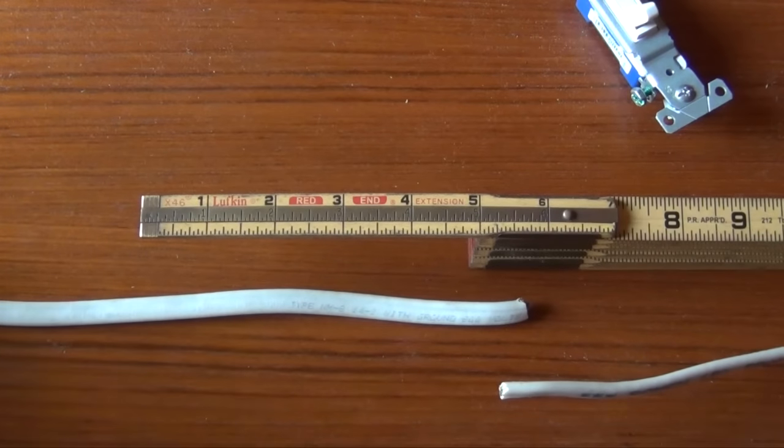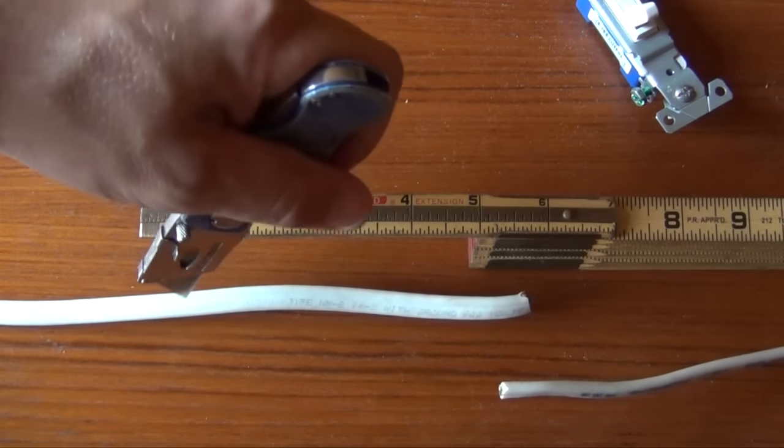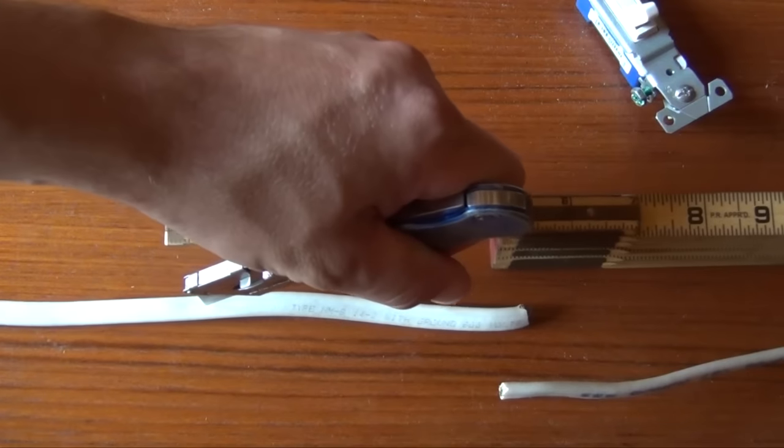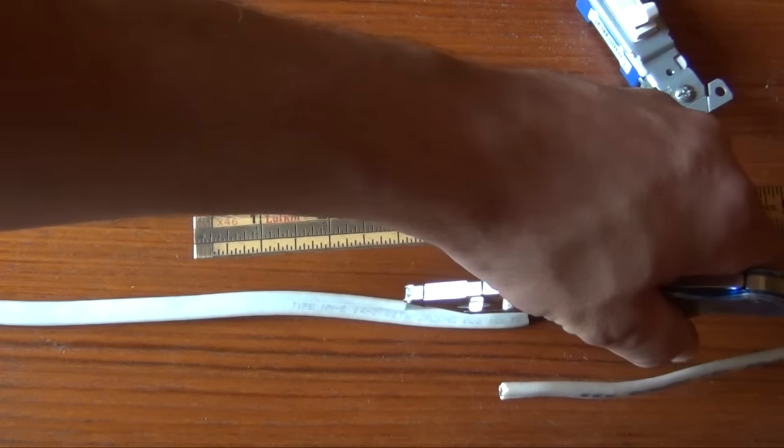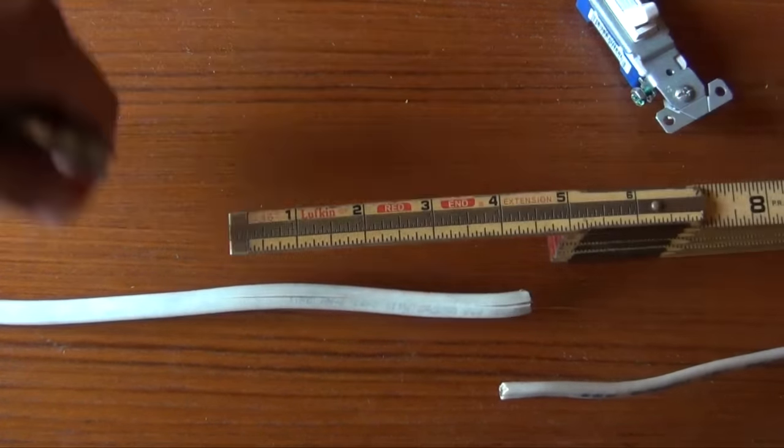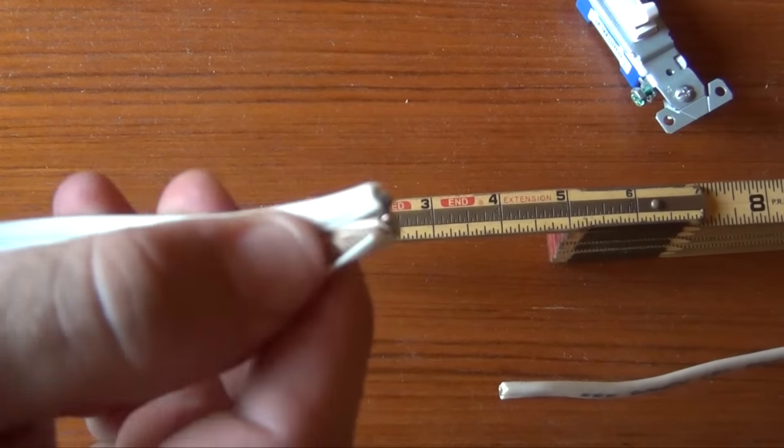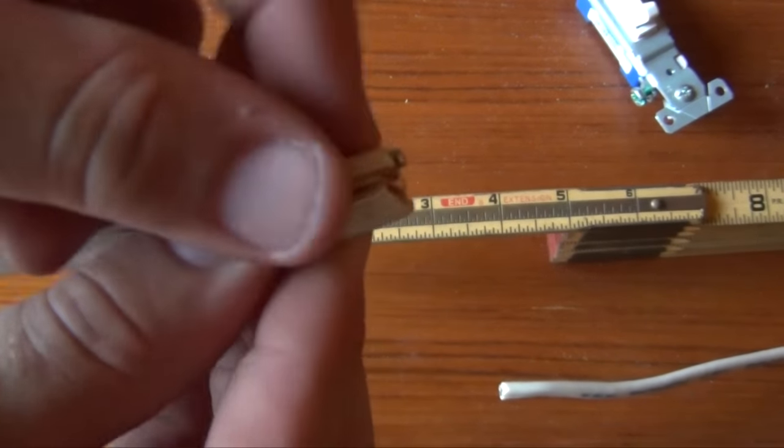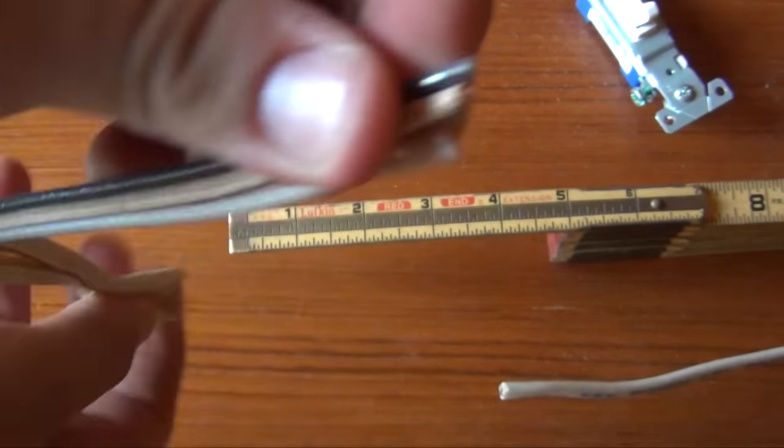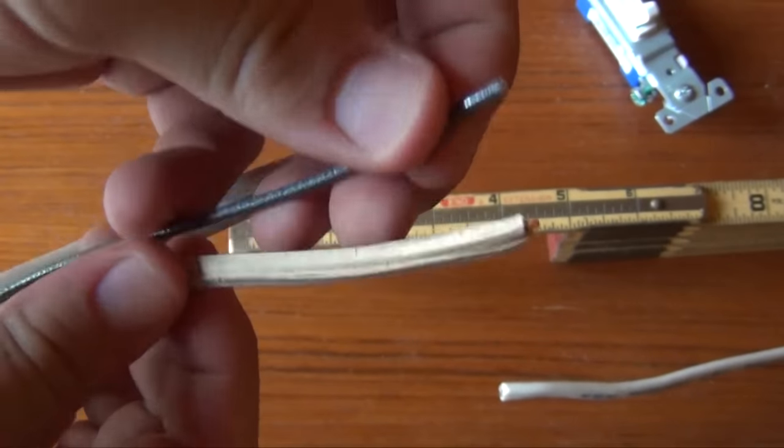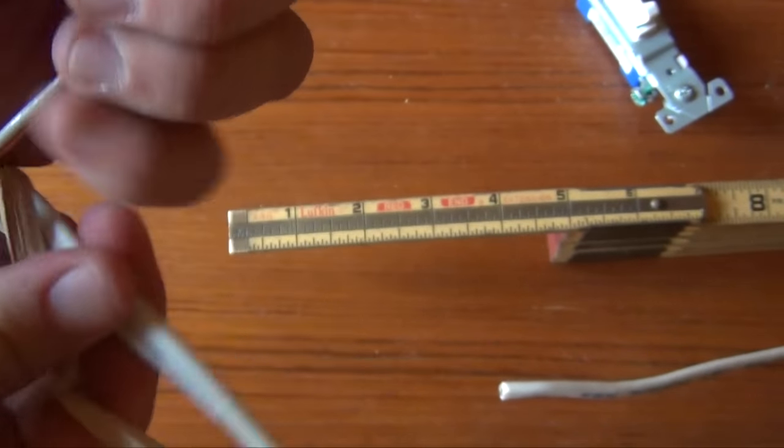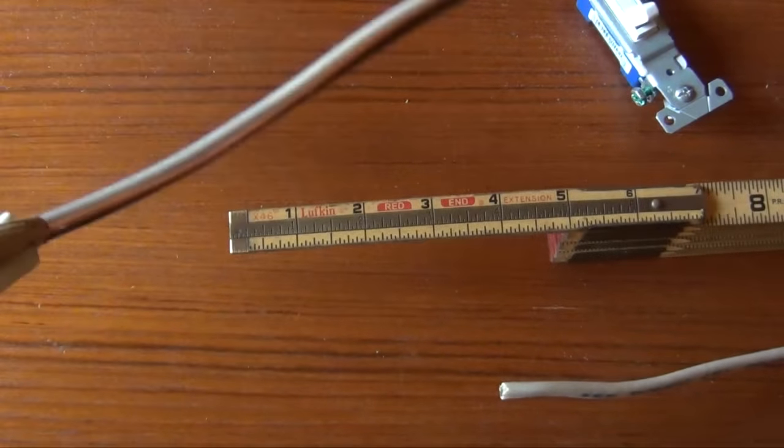We will begin our tutorial by stripping off the outside sheathing. Measure approximately 6 inches, take your utility knife, and score down the middle of your electrical wire. Once you've made your cut, pull back on the sheathing, including the brown paper you may find around your ground wire, and take your utility knife and cut it off.